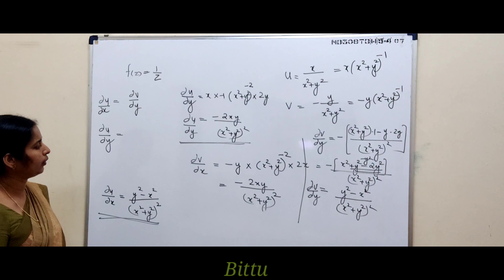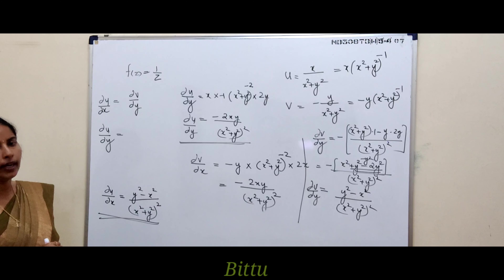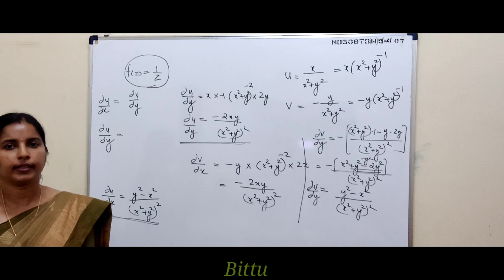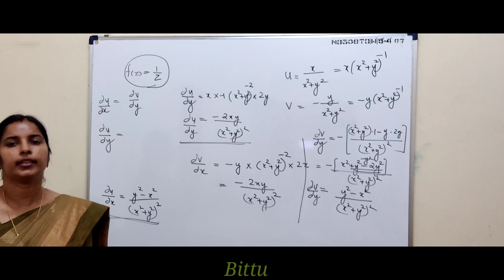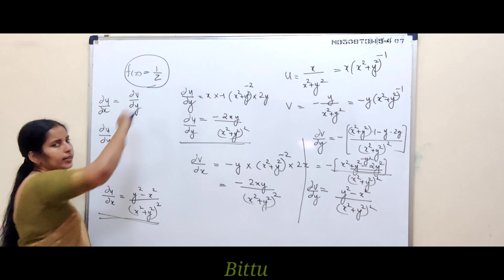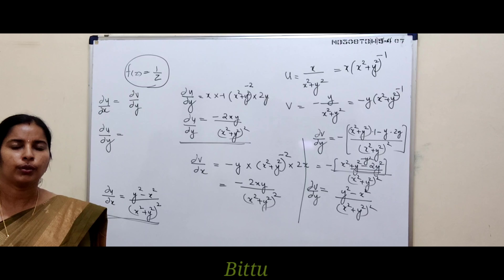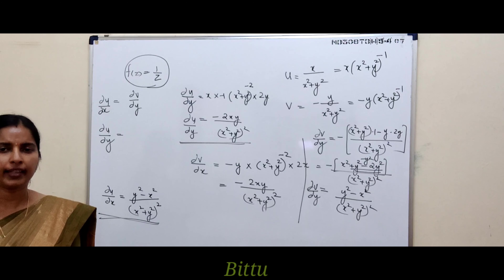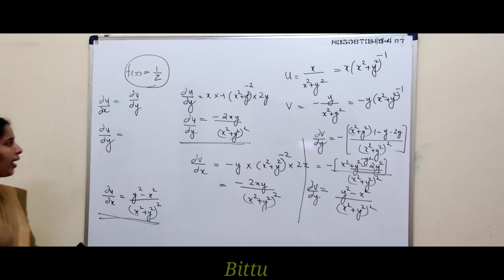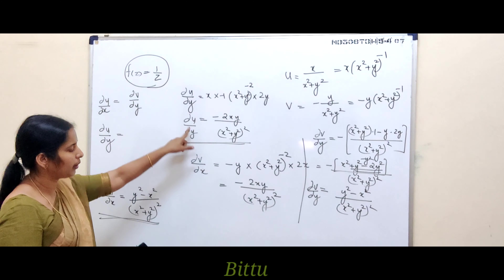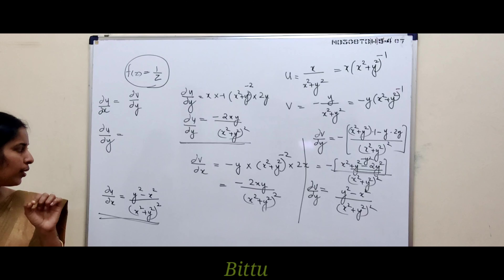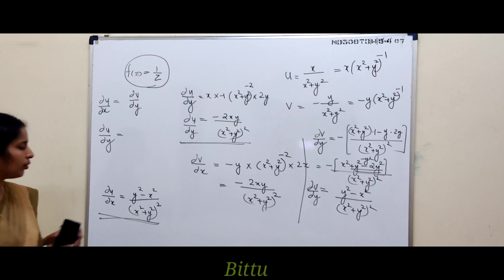I noticed this sign mistake because 1/z is analytic except at z = 0, so we must have these conditions satisfied. Now, the CR equations are satisfied by u and v everywhere, but the partial derivatives are not continuous everywhere — that is the issue with this function.